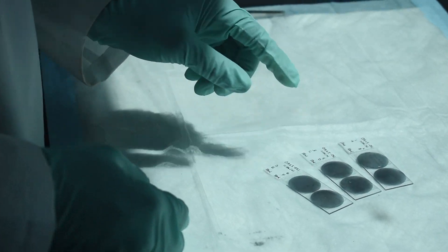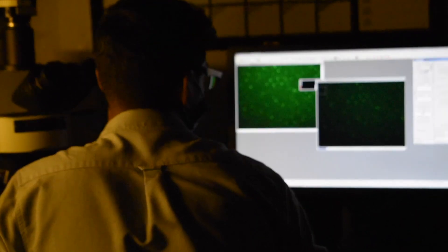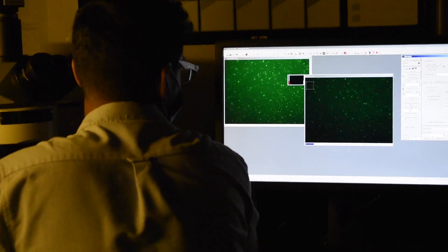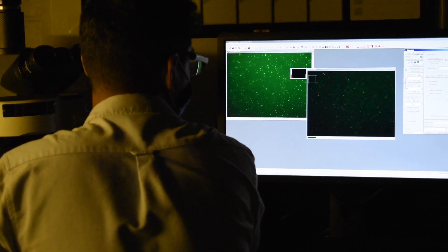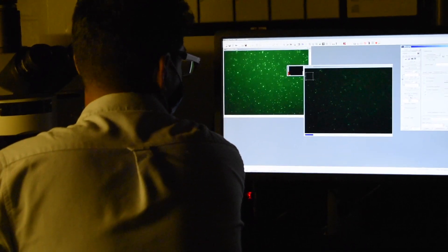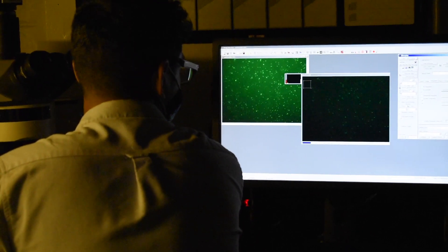And then once on the microscope we do manual counts using a grid in one of the eyepieces and we count how many bacteria there are. We can also do image analysis and get the software to do some counting for us as well.